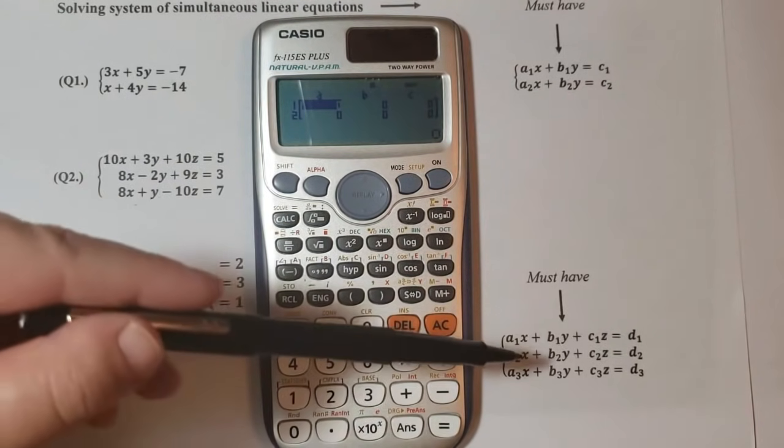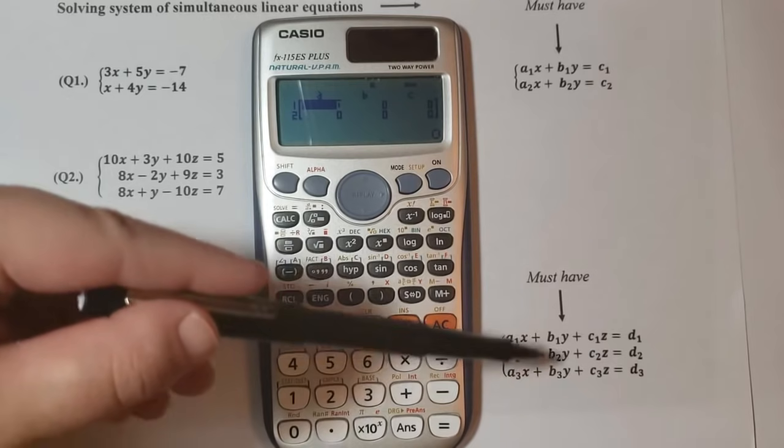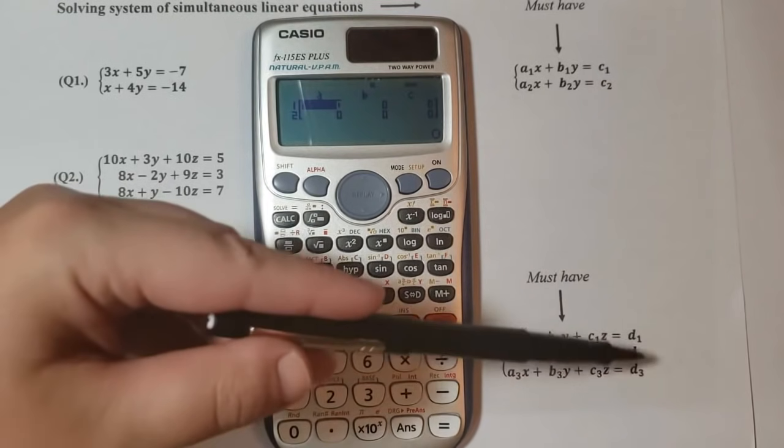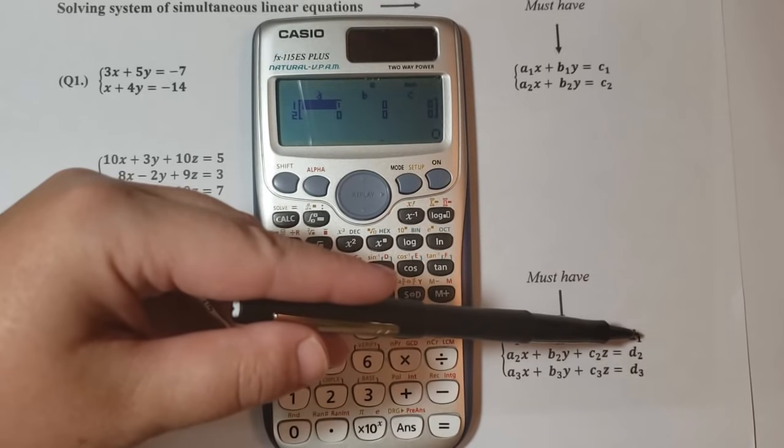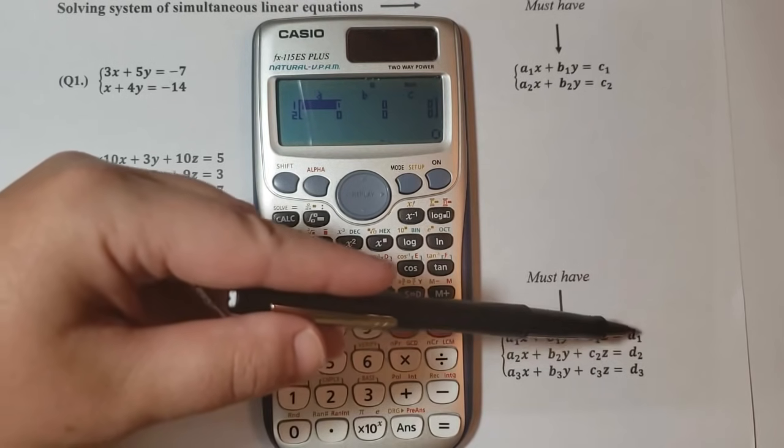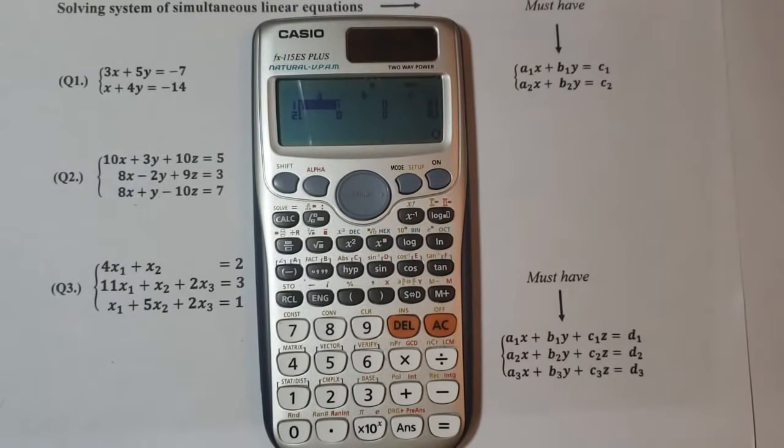And we have lined our variables x, y, z and the numbers. The most important thing is the numbers should be on the right side of the equation.